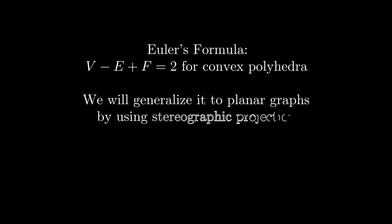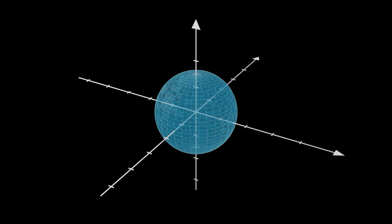Euler's formula states that V minus E plus F is equal to 2 for convex polyhedra, but we will generalize this to all planar graphs by using stereographic projection.